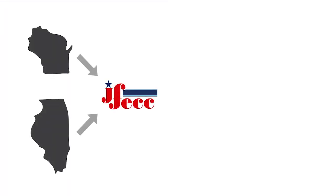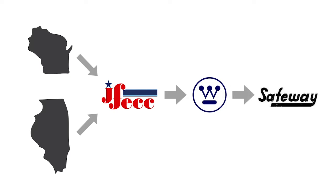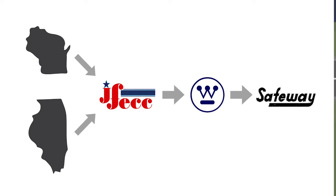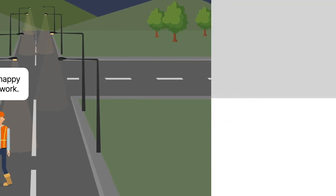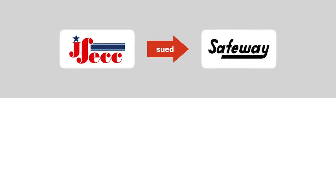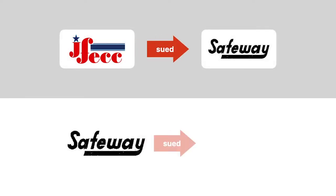Two states hired J.F. Edwards Construction to install lighting on public highway projects. Edwards ordered the materials needed for the project from Westinghouse. In turn, Westinghouse entered a contract with Anderson Safeway to supply a subset of materials. The completed lighting was a disappointment, and the states withheld payment, spurring litigation among Edwards, Safeway, and Westinghouse. In two separate actions that were consolidated, Edwards sued Safeway, and Safeway sued Westinghouse.